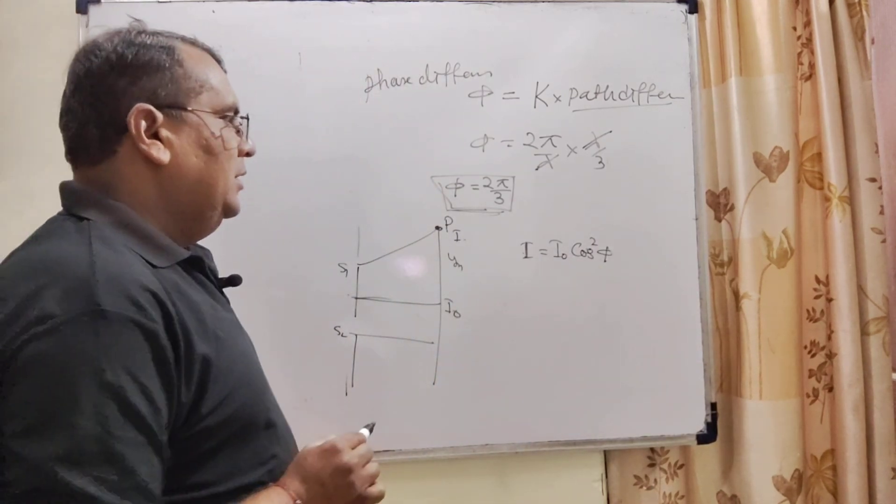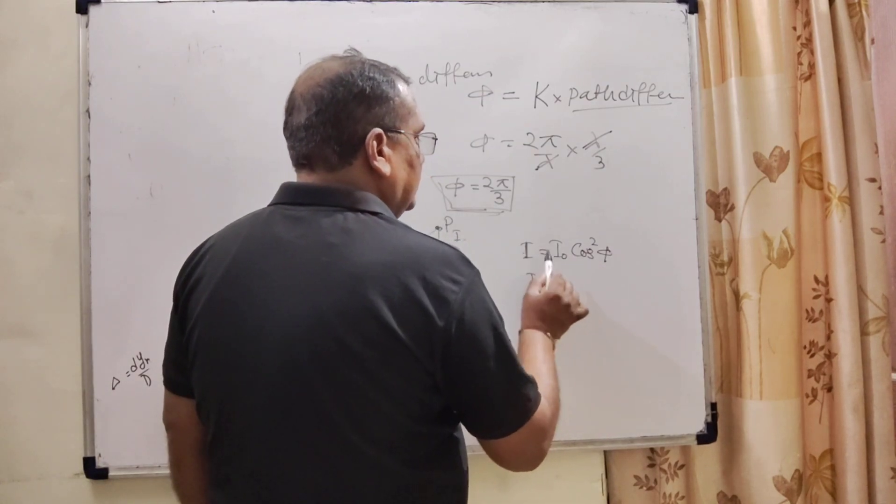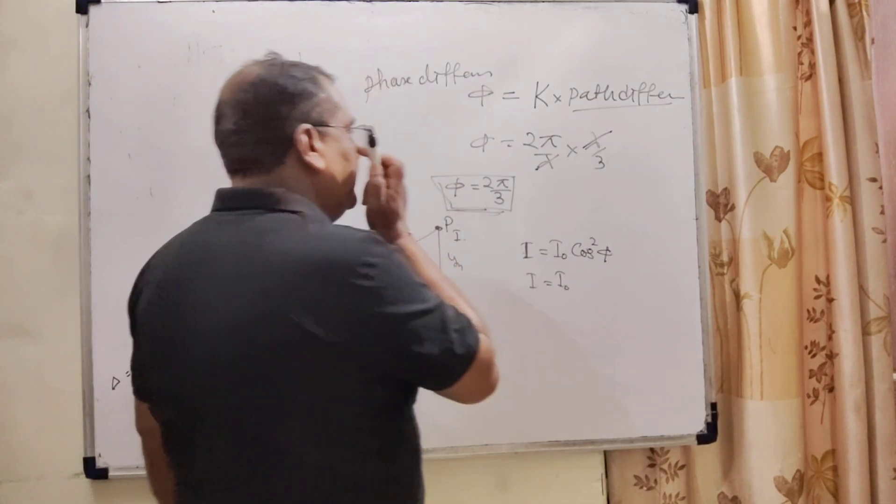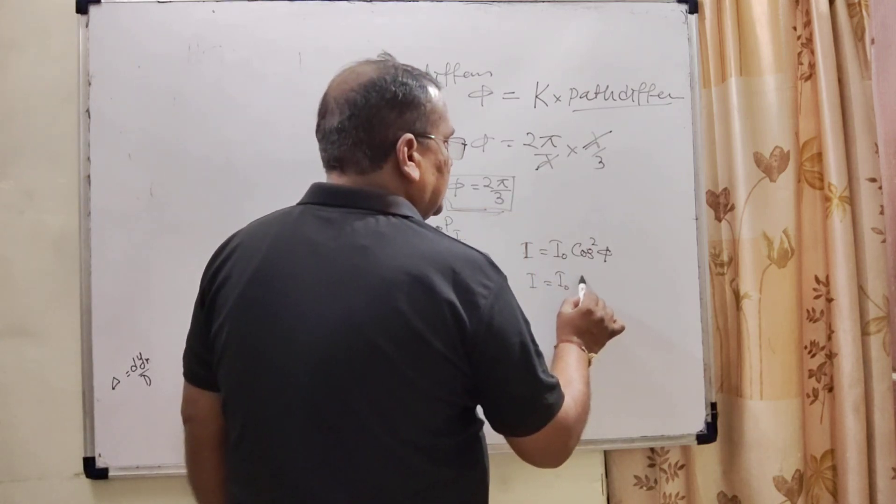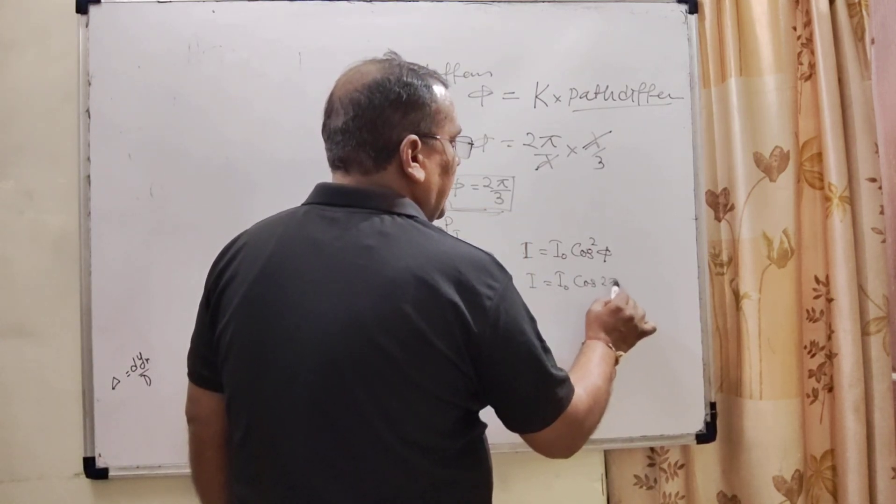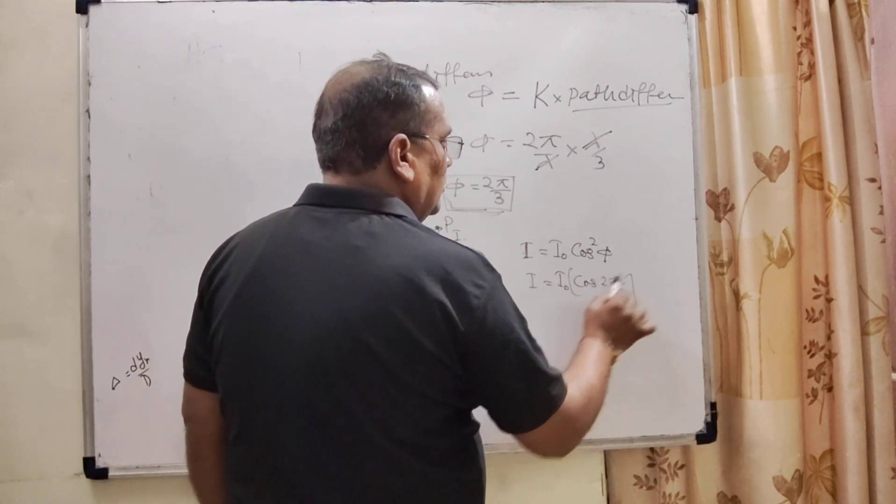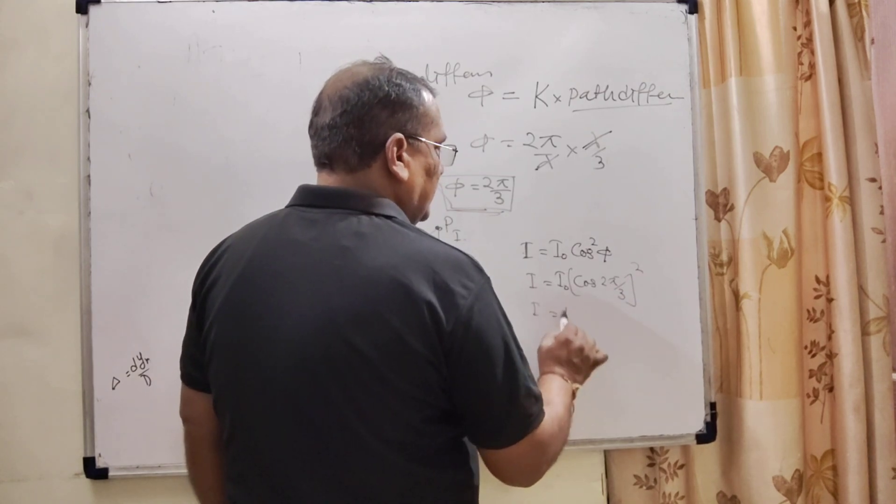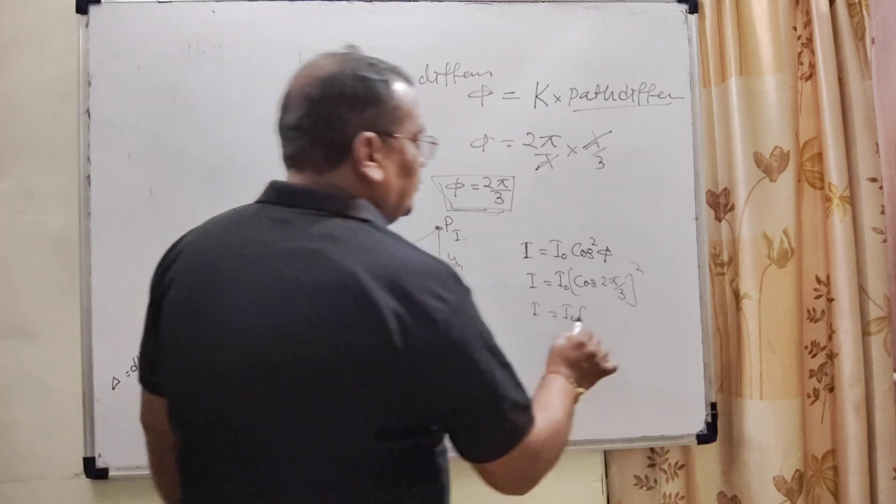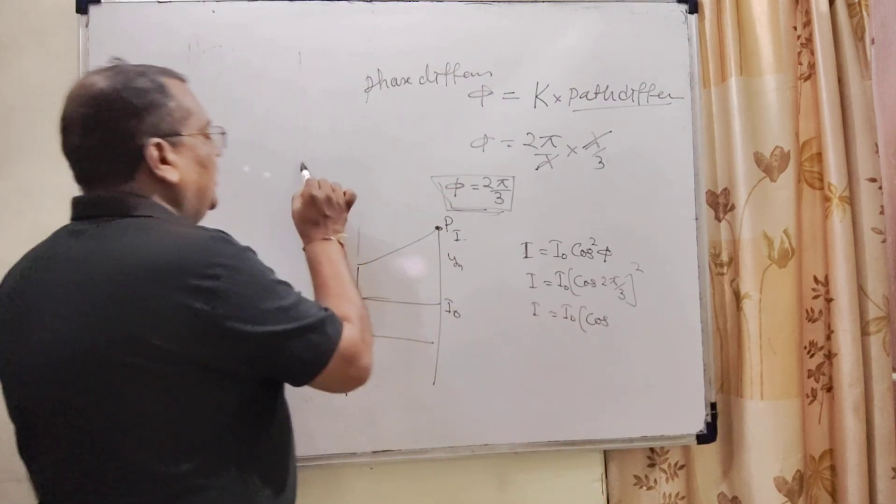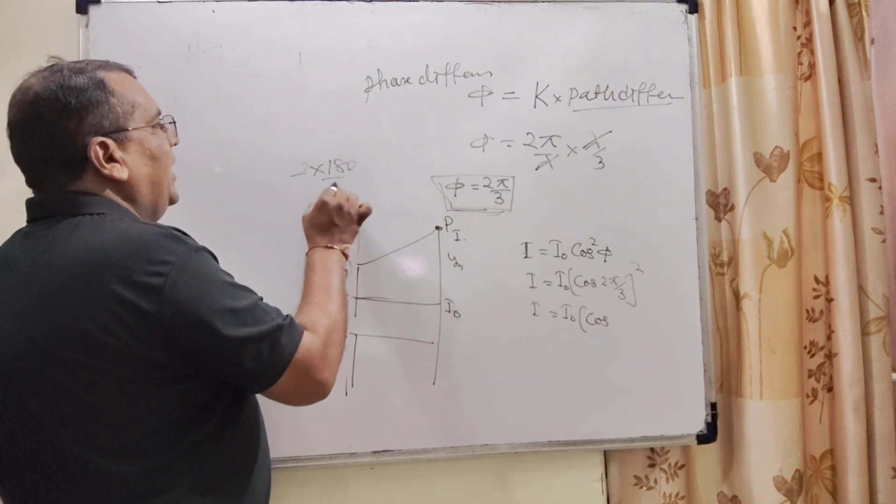Here phi is the phase difference and what is the phase difference? That is 2 pi by 3. So here cos of 2 pi by 3 whole square. And what is 2 pi by 3? 2 pi by 3 means 120 degrees. Here 2 into 180 by 3.